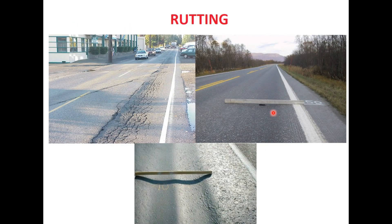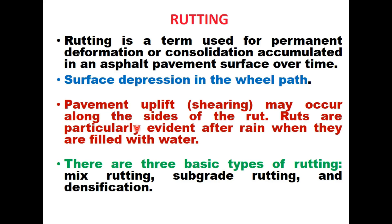Rutting can be a few millimeters or a few centimeters deep depending upon several factors, and sometimes rutting is combined with cracking. In general, rutting is the term used for permanent deformation or consolidation accumulated in an asphalt pavement surface over time. It is the depression in the wheel path, and pavement lift or shearing may also occur along the side of the rut. Ruts are particularly evident after rain when they are filled with water.